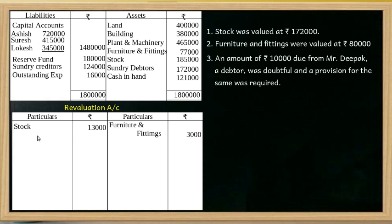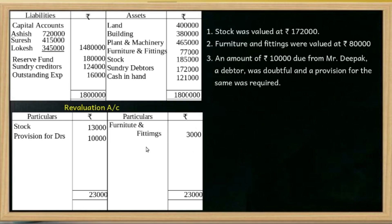Provision created. Under the revaluation account, debit provision for debtors is Rs. 10,000. Revaluation account debit is Rs. 10,000. We will prepare the revaluation account balance — debit side and credit side. The expense side shows Rs. 23,000 and the loss side balance is Rs. 21,000.